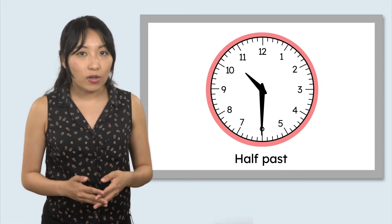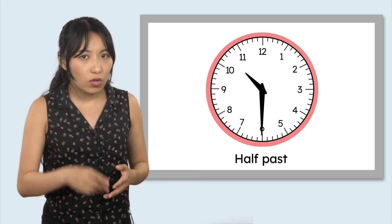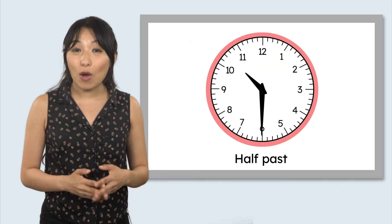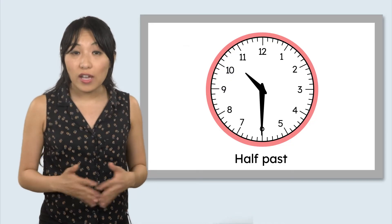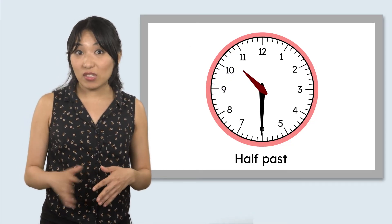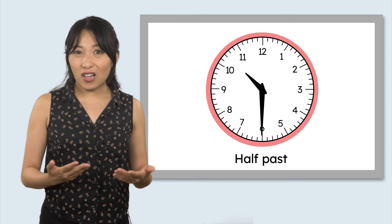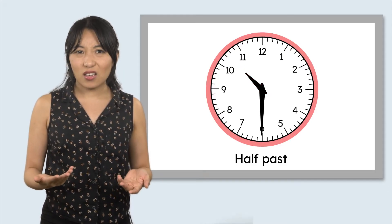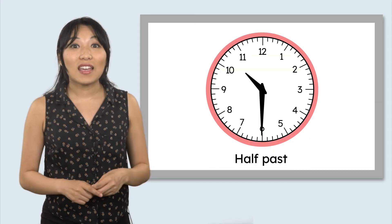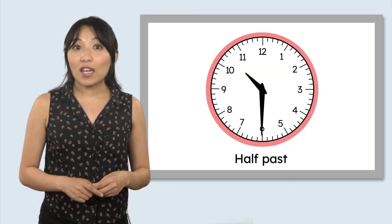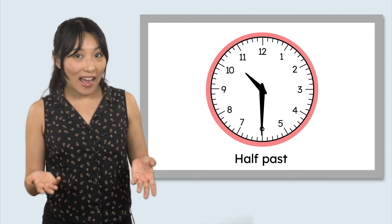Mia noticed something about the hour hand. Did you notice it too? While the minute hand was moving, the hour hand was moving too. It started at the 10, and now it's halfway between the 10 and the 11. So, how do we know which hour to say? When the minute hand is on the 6, or halfway around the clock, the hour hand will be halfway to the next hour.